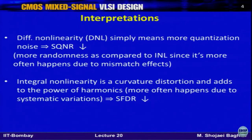Noise floor is more than expected when you have DNL. If you plot DNL as a function of code, it looks almost random — not exactly random, because for some range of codes it shows more peak-to-peak variation and for others less — but overall it shows a random behavior.